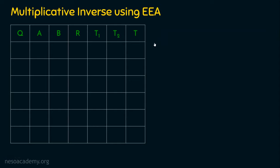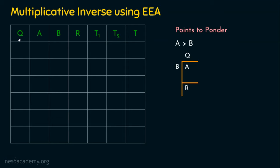Now, as usual, we have a set of prerequisites. The points to ponder: first, A should be greater than B. We are very well aware of this because already while solving problems of GCD, we understood that A should be greater than B. We know how to fill Q and R — after placing the values of A and B, we perform A mod B, dividing A by B, which gives us a quotient placed in Q and a remainder placed in R.